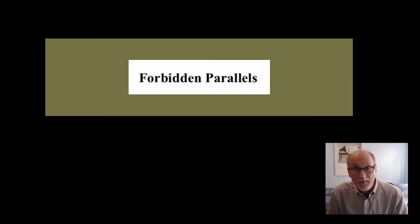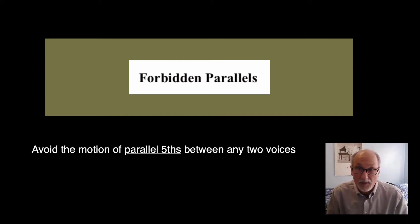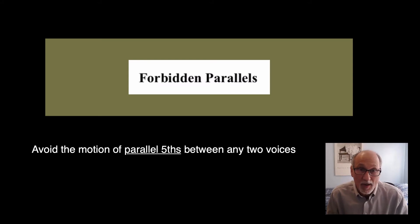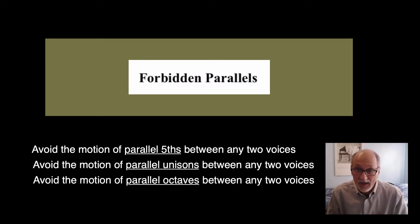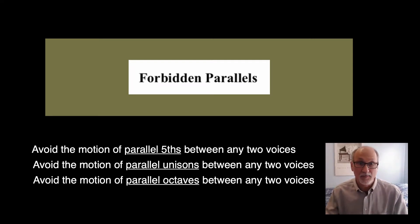And here's the rule. If the interval of a harmonic perfect fifth appears between any two voices, it will never appear between those same two voices on the next chord. In other words, we will rarely if ever see parallel fifths motion in any pairs of voices. And similarly, if the interval of a harmonic unison or octave appears between any two voices, it will not appear between those same two voices on the next chord. We will rarely if ever see parallel octaves or parallel unison motion in any pairs of voices.